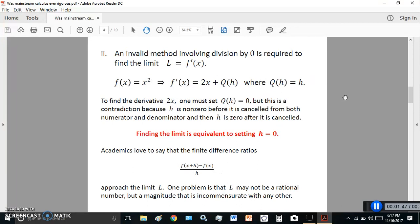The second reason is that an invalid method involving division by zero is required to find the limit. Look, if you have any functions such as x squared, and you go through that baloney called first principles derivation, you'll get 2x plus q(h), where q(h) is an expression in x. In this case, q(h) is h.